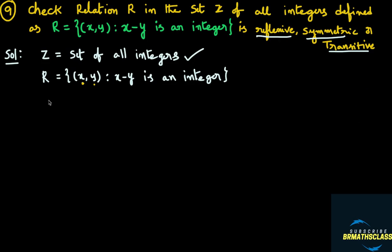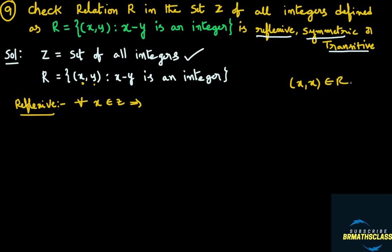Now we need to check that this relation is reflexive, symmetric, or transitive. First, we'll check whether this relation is reflexive or not. To check the reflexive property, for any x belonging to Z, we take an integer x. If the ordered pair (x, x) is also there in the relation, then we say that this relation is reflexive. I take x as an integer. What is x minus x?